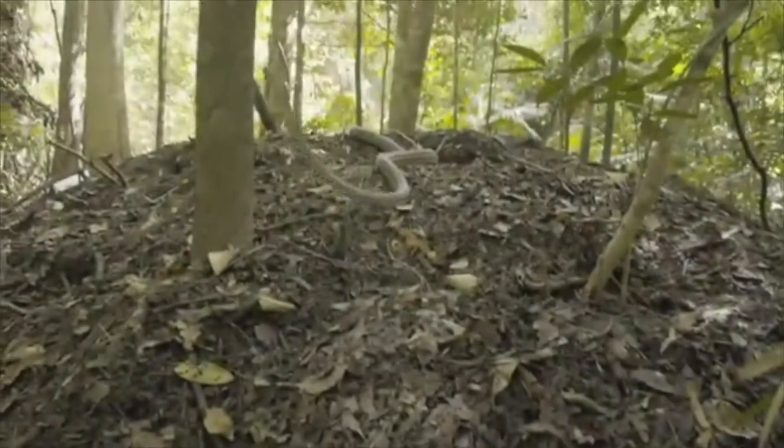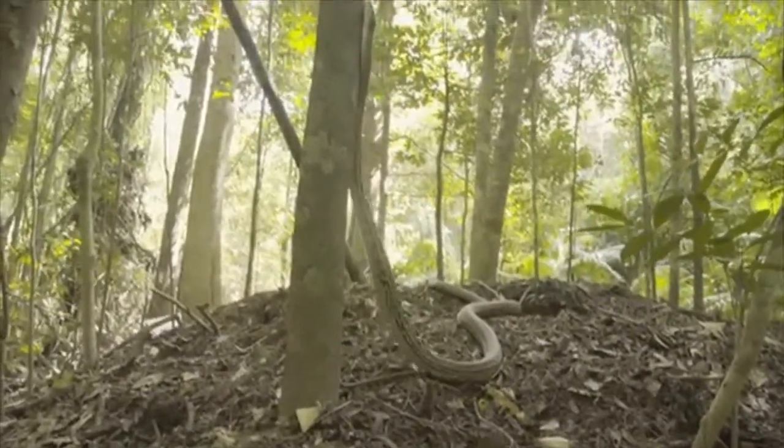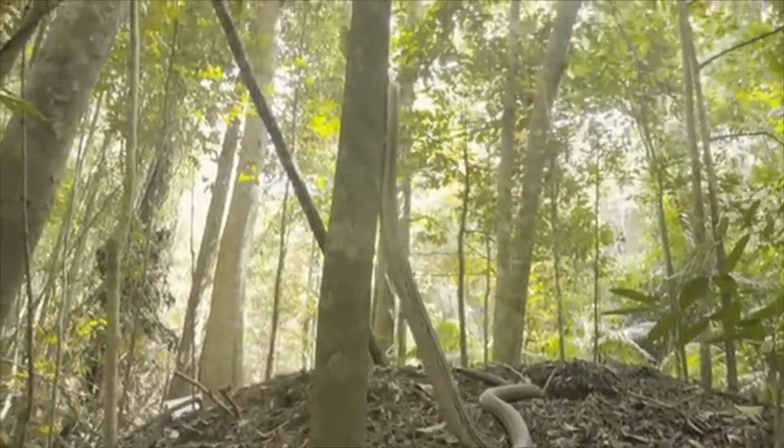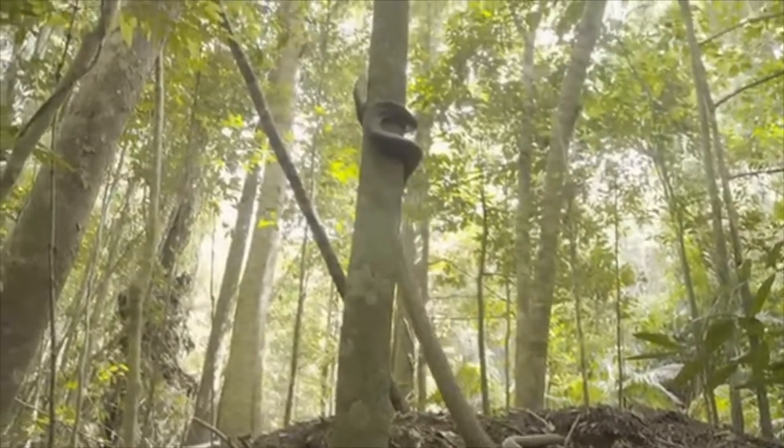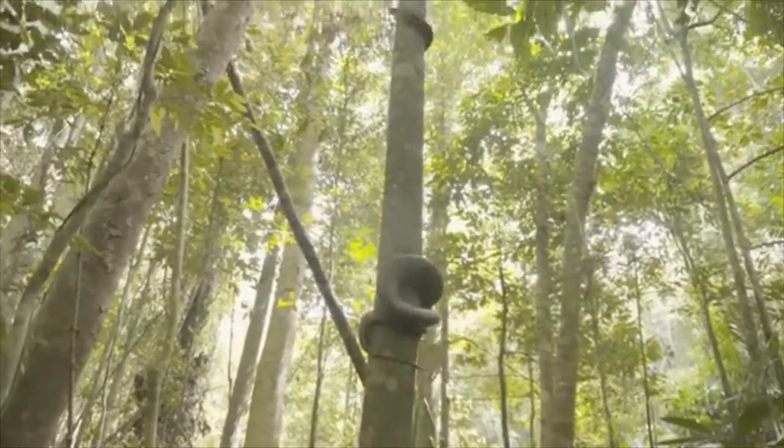Did you know that there are more than 3,000 species of snake on the planet? They're found everywhere except Antarctica, Iceland, Ireland, Greenland, and New Zealand. About 600 species are venomous, and only about 200, which is 7%, are able to kill or significantly wound a human.